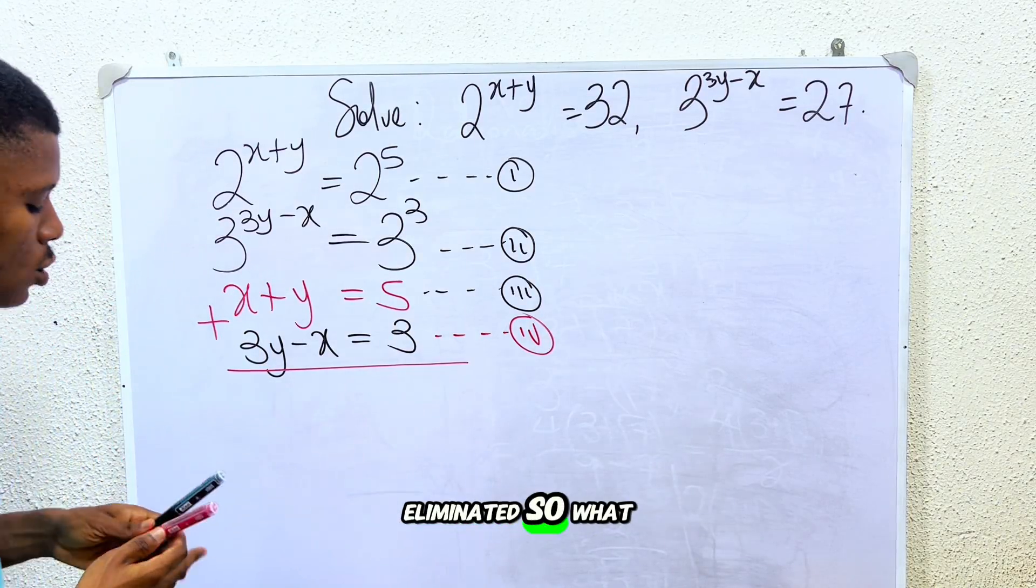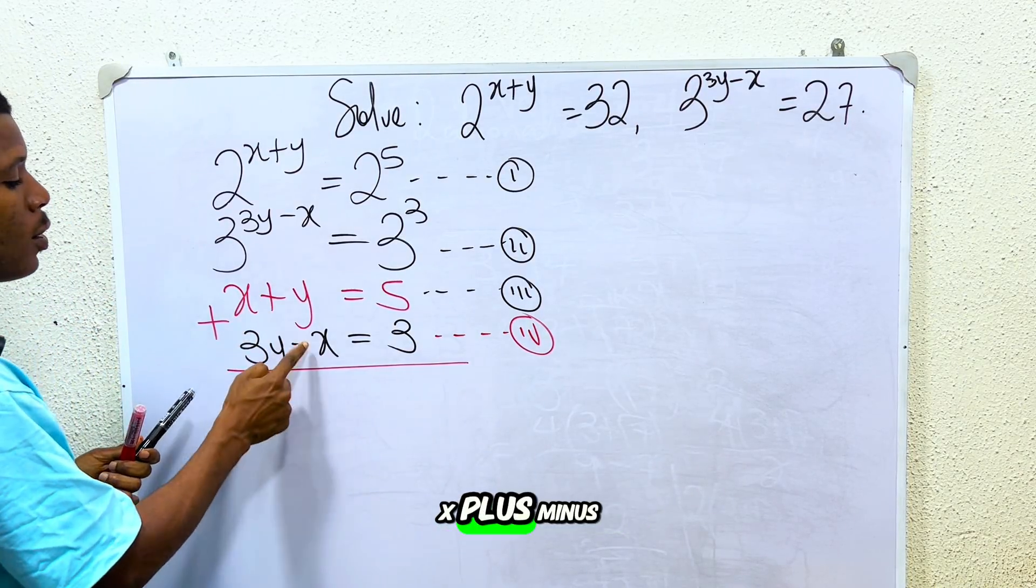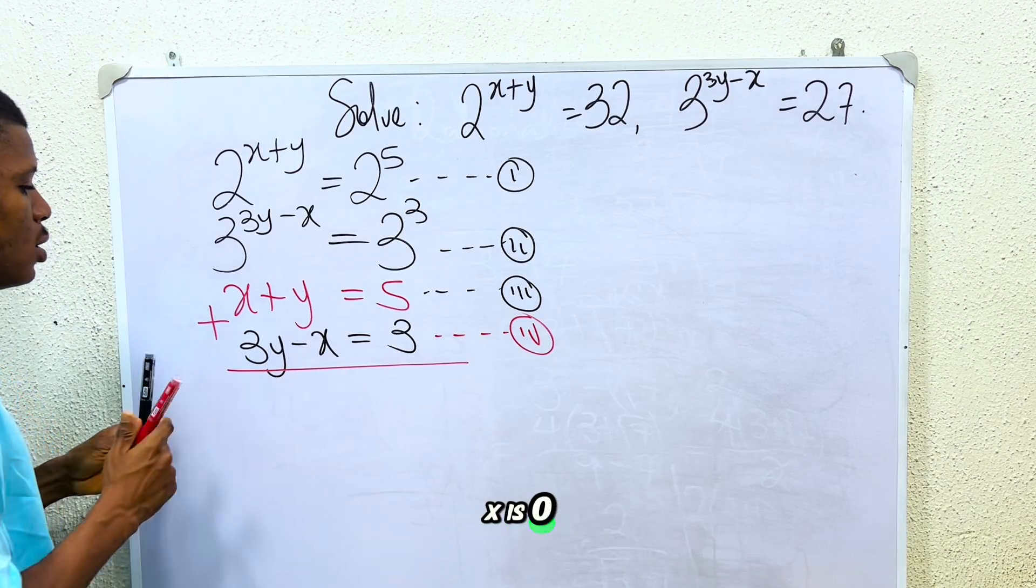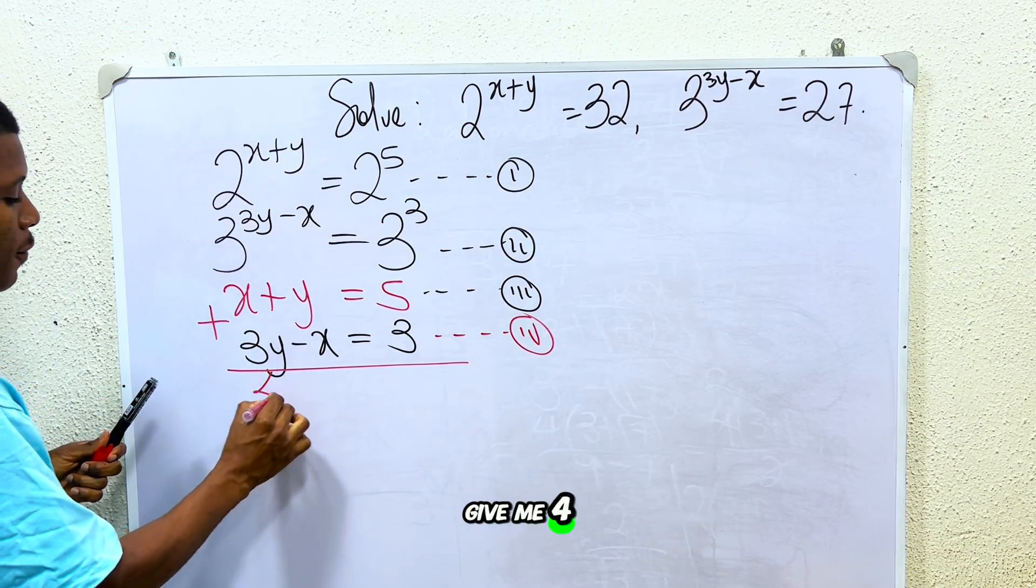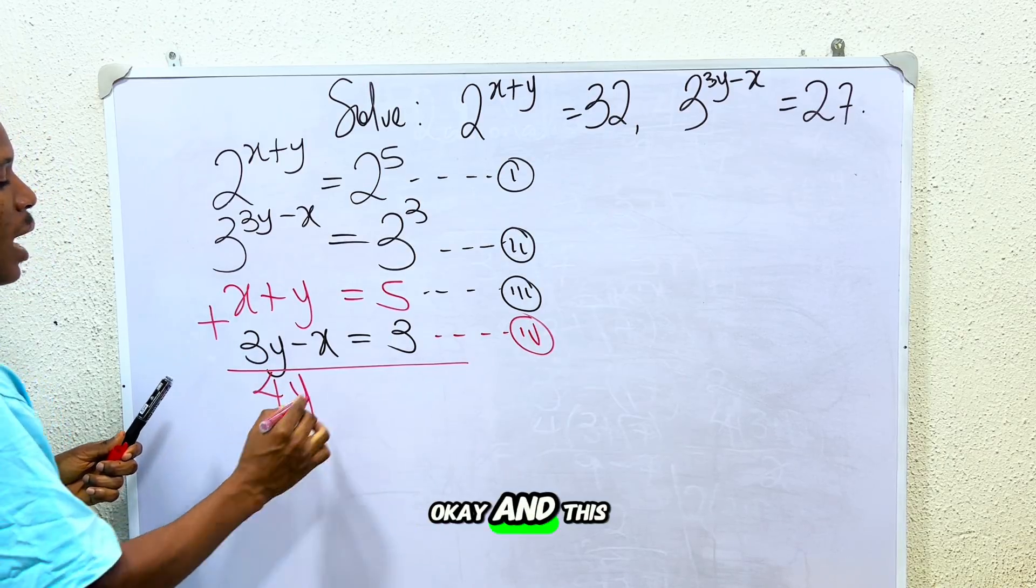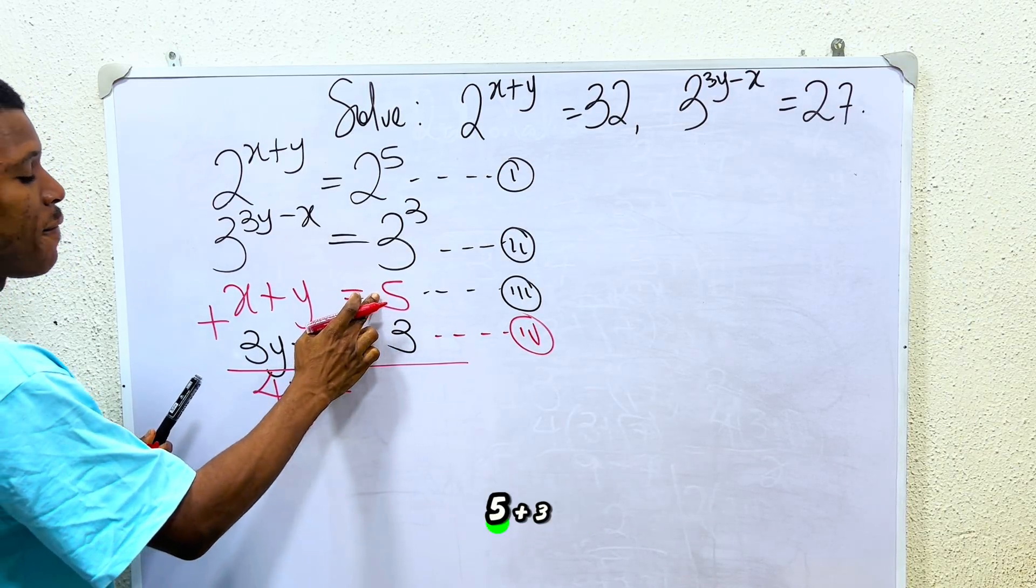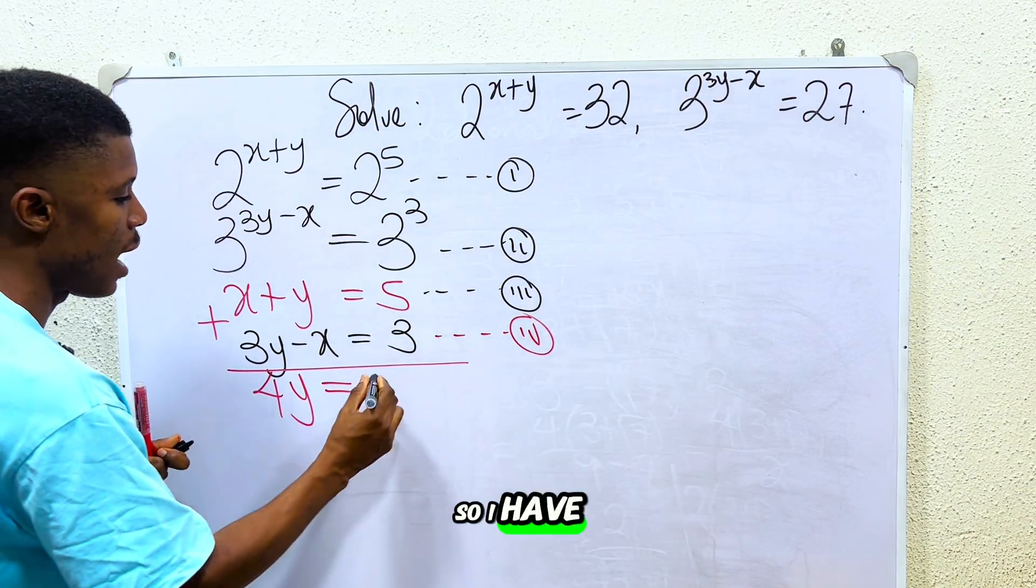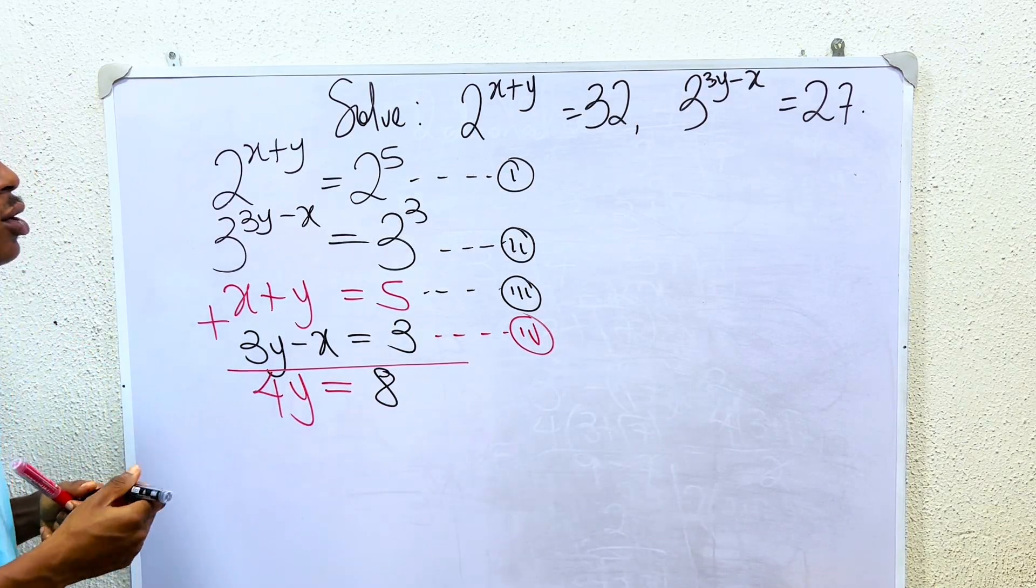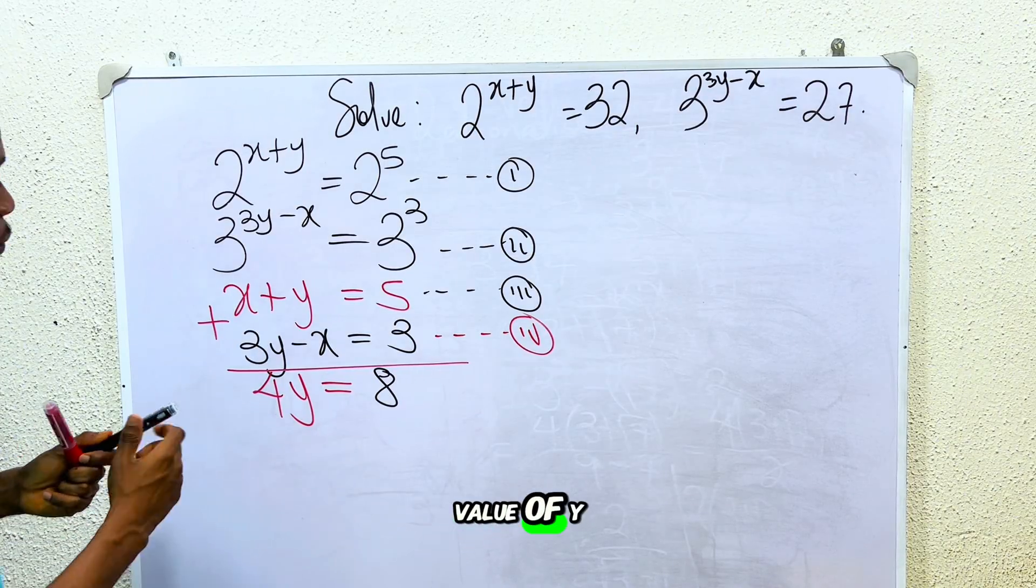So what do you observe? X plus minus x is zero. So y plus 3y will give me 4y, and this is equal to 5 plus 3, which is going to give me 8. So I have it to be 8.